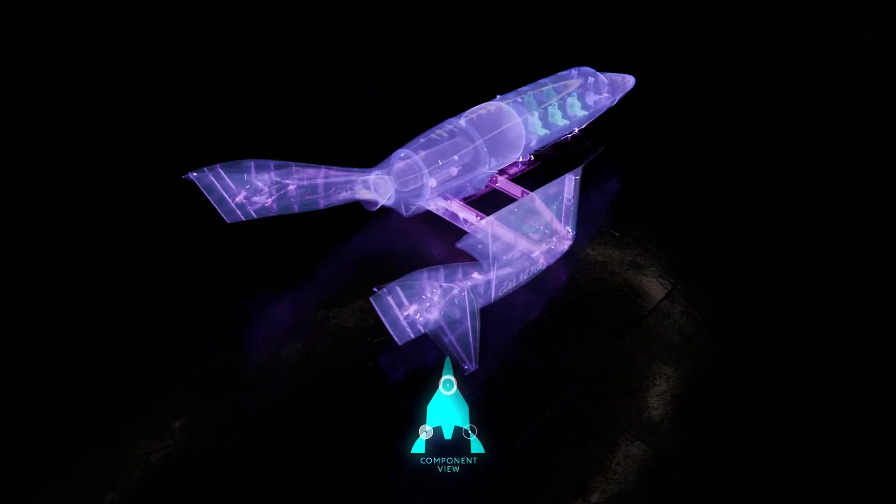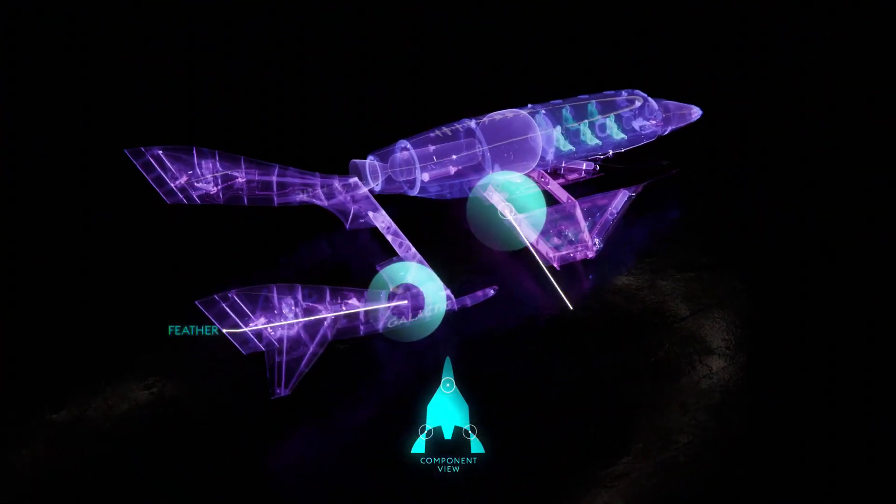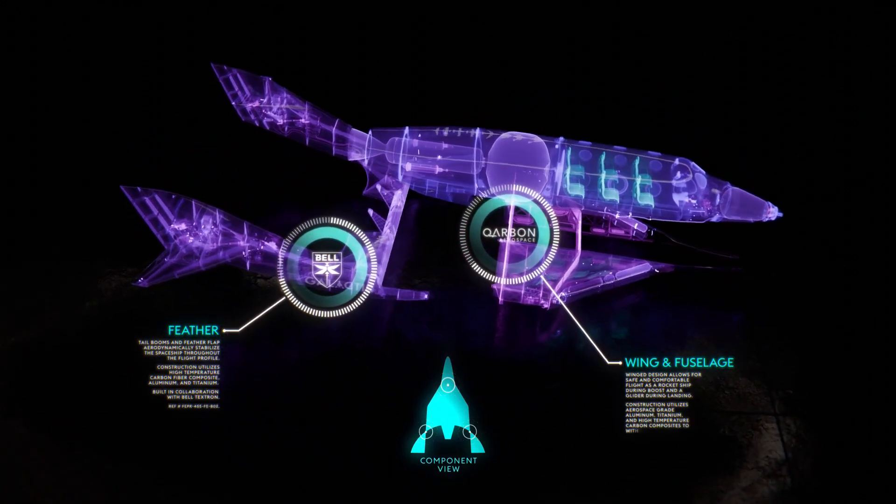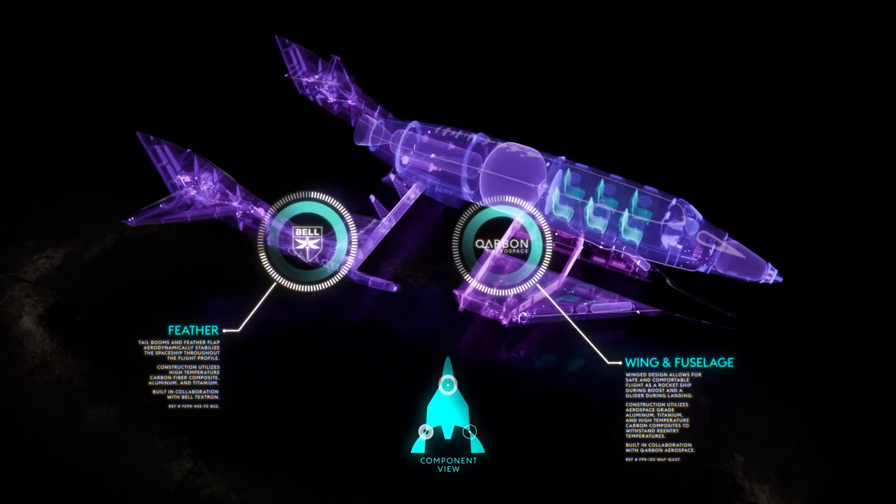Delta-class spaceships are designed in subcomponents and built using state-of-the-art aerospace development practices, enabling a far more efficient and rapid build.